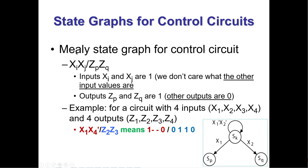Remember that when you specify your state graphs, you don't want to leave something unspecified — that does create a problem. For example: if they're both zero, you stay in SK. But what if they're both one — then where do you go? It doesn't specify that the way it's written. That can create some problems and you don't want that.